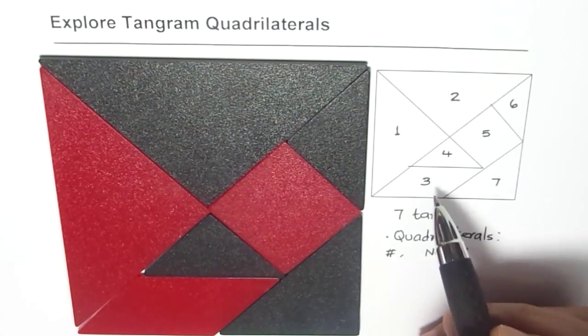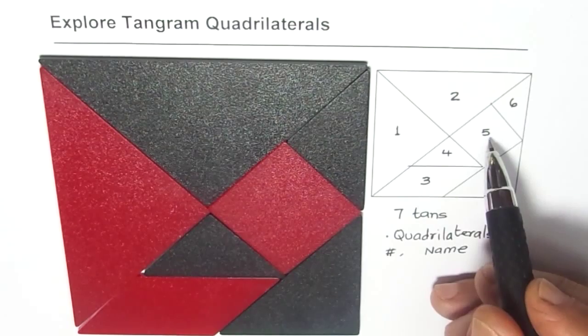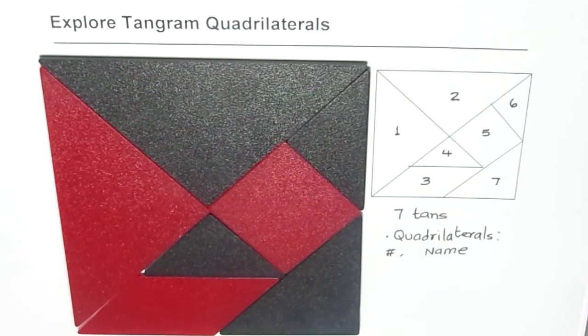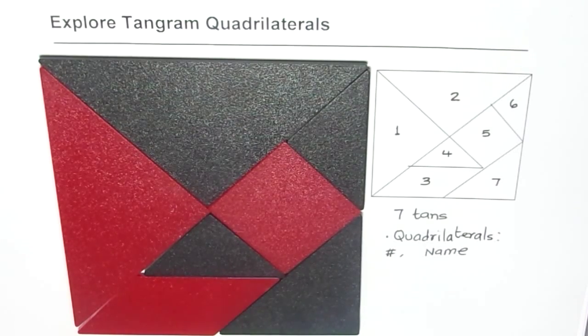And then each piece, there are two pieces with four sides, piece number 3 and piece number 5. Piece number 3 here is a parallelogram. It has got two pairs of parallel sides, correct? And piece number 5 is a square which has four equal sides, right? So these are the quadrilaterals which you can see in this particular tangram.